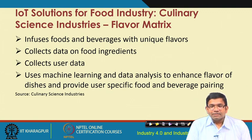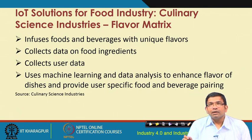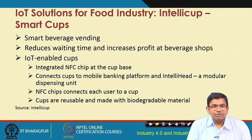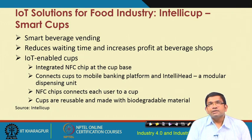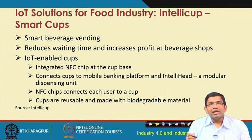Culinary Science Industries has the Flavor Matrix, which infuses foods and beverages with unique flavors. They collect data on food ingredients and user data, and use machine learning and data analytics to enhance the flavor of dishes and provide user-specific food and beverages. IntelliCup has a smart cups solution — a smart beverage vending machine that reduces waiting time and increases profit at beverage shops. These are IoT-enabled cups with NFC-integrated chips at the base, connecting cups to a mobile banking platform and the IntelliHead modular dispensing unit. The cups are reusable and made with biodegradable material.